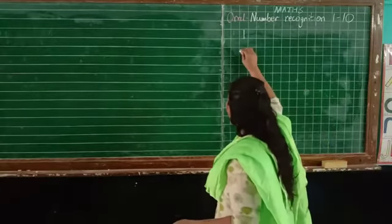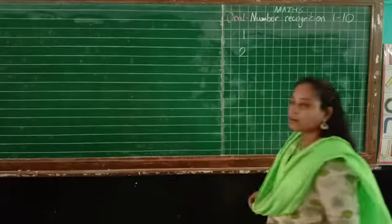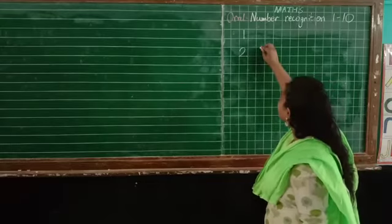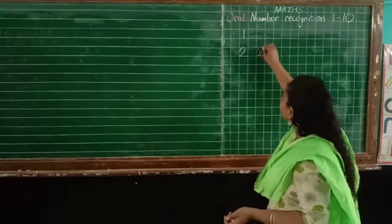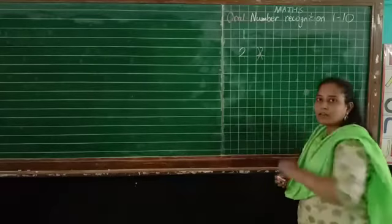2, how will you write? Tummy, slipping line. How will you write 2? Tummy, slipping line. See, if you write 2 like this, then what will I give? Wrong, okay? Tummy, slipping line, 2.